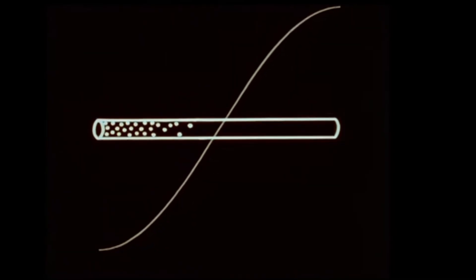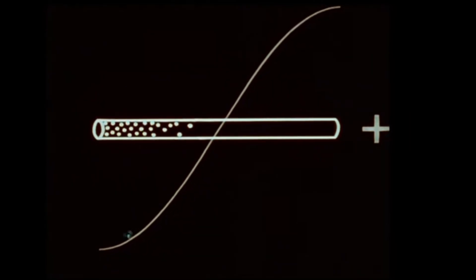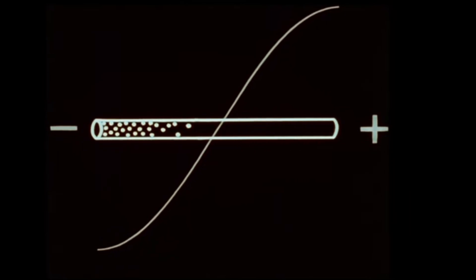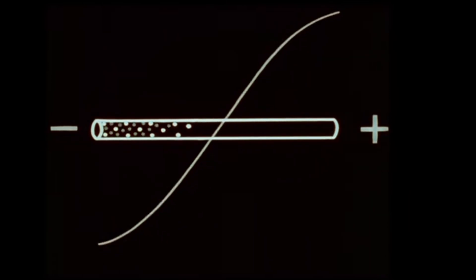At this instant, the antenna has a positive voltage at this end, and a negative voltage at this end. When the voltage builds in the opposite direction, the polarity reverses.